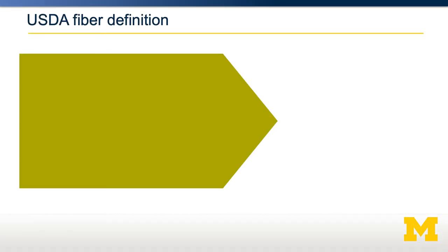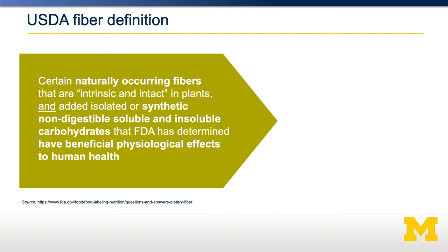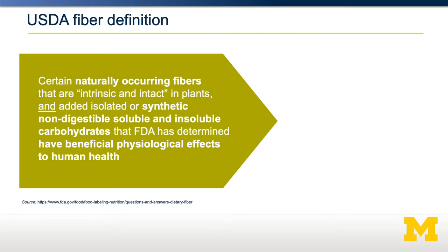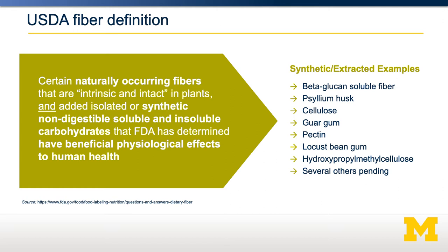The United States Department of Agriculture has its own definition for fiber, using the same paradigm. It includes naturally occurring fibers that are intrinsic and intact in plants, and isolated or synthetic soluble or insoluble carbohydrates that the FDA has determined to have a beneficial effect — combining dietary fiber and functional fiber. This definition recently changed under some controversy, because synthetic fibers, as long as they've been shown to have some physiological benefit, can now appear on a nutrition facts label. The key factor is it has to be non-digestible and must have some demonstrable benefit to human health.